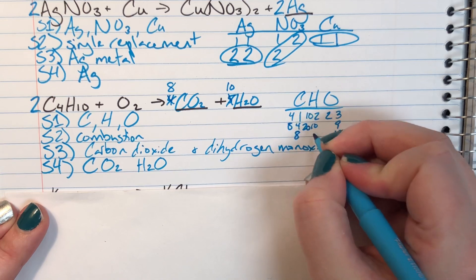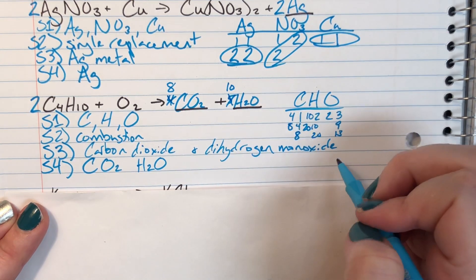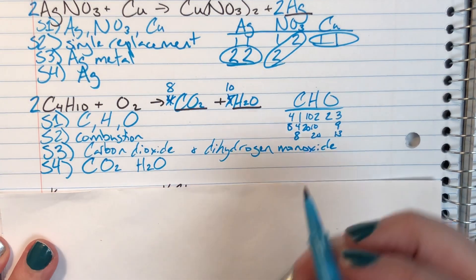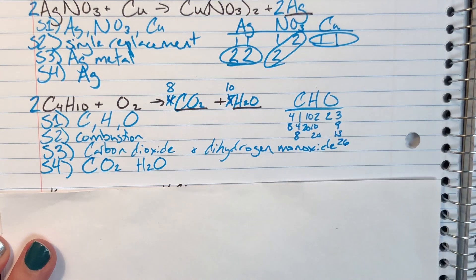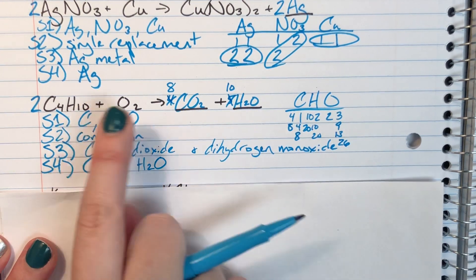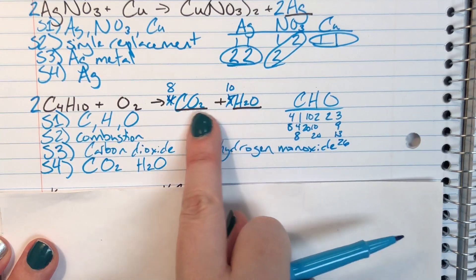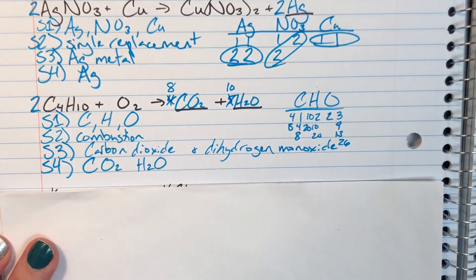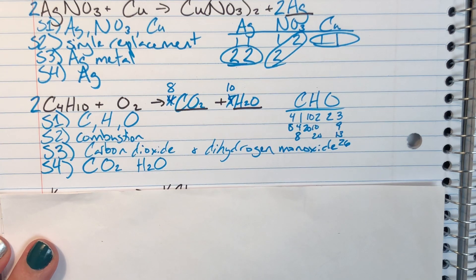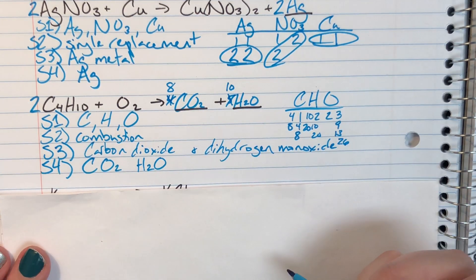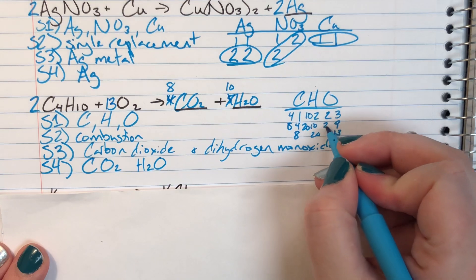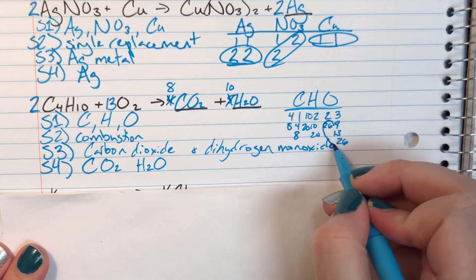I multiply C4H10, CO2, and H2O all by 2, keeping counts equal on both sides: carbon is 8 and 8, hydrogen is 20 and 20. My new oxygen count on the right is 8×2=16 plus 10, giving 26. Now I solve for oxygen's coefficient: 2 times what equals 26? That's 13. Adding a coefficient of 13 in front of O2 balances the reaction.